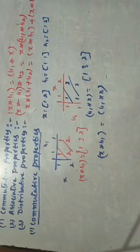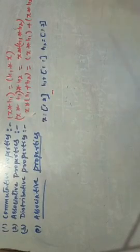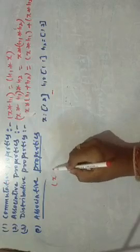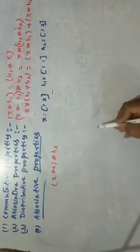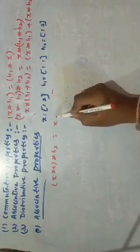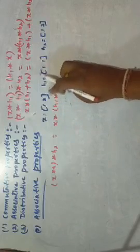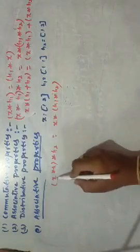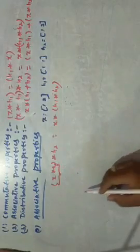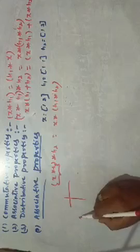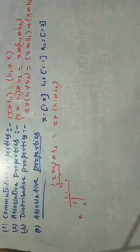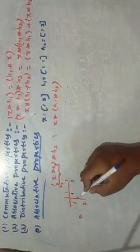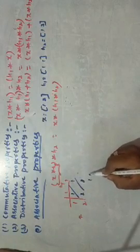Now, for the associative property: the convolution of X with H1, and their result with H2, is equal to the convolution of X with the result of H1 convolved with H2. First, I will solve the left side. I will take the convolution of X with H1. X is 1, 2 and H1 is 1, 1. In matrix form the values are 1, 1, 2, 2. Marking diagonal values, we get the result of X convolved with H1 as 1, 3, 2.